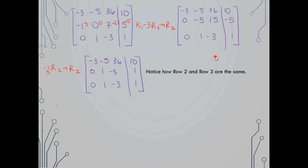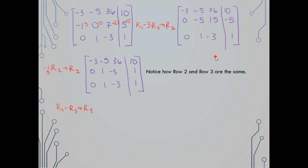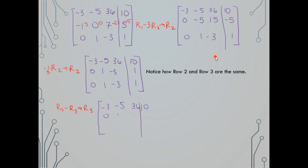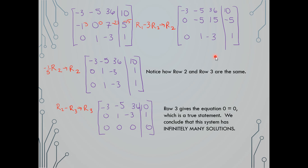Since row 2 and row 3 are the same, I subtract row 2 from row 3 and put it back in row 3. Row 1 stays the same, row 2 stays the same, and row 3 becomes 0, 0, 0, 0. Since row 3 gives the equation 0 equals 0, which is a true statement, we conclude this system has infinitely many solutions.